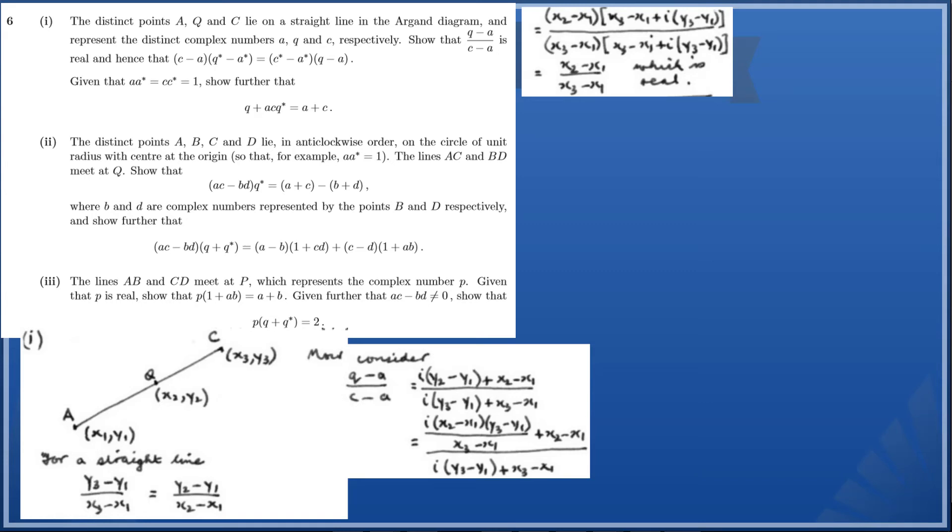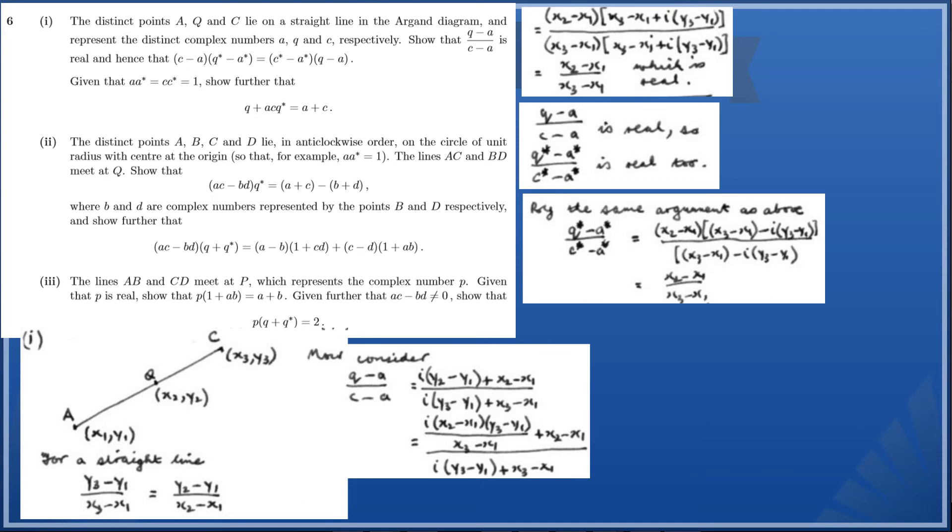So it very quickly follows that (q*-a*)/(c*-a*) is also real as well. With complex numbers, the complex conjugate has a very similar property to its original counterpart. By the same arguments as above, we end up with (x₂-x₁)/(x₃-x₁), which is identical to our original result. Therefore we can say that (q*-a*)/(c*-a*) = (q-a)/(c-a).